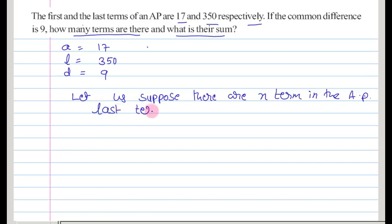Last term an is equal to 350 and here nth term of AP formula we have to apply. We can write that a plus n minus 1 into d is equal to 350. The nth term of AP is equal to a plus n minus 1 into d, this formula we have applied here.